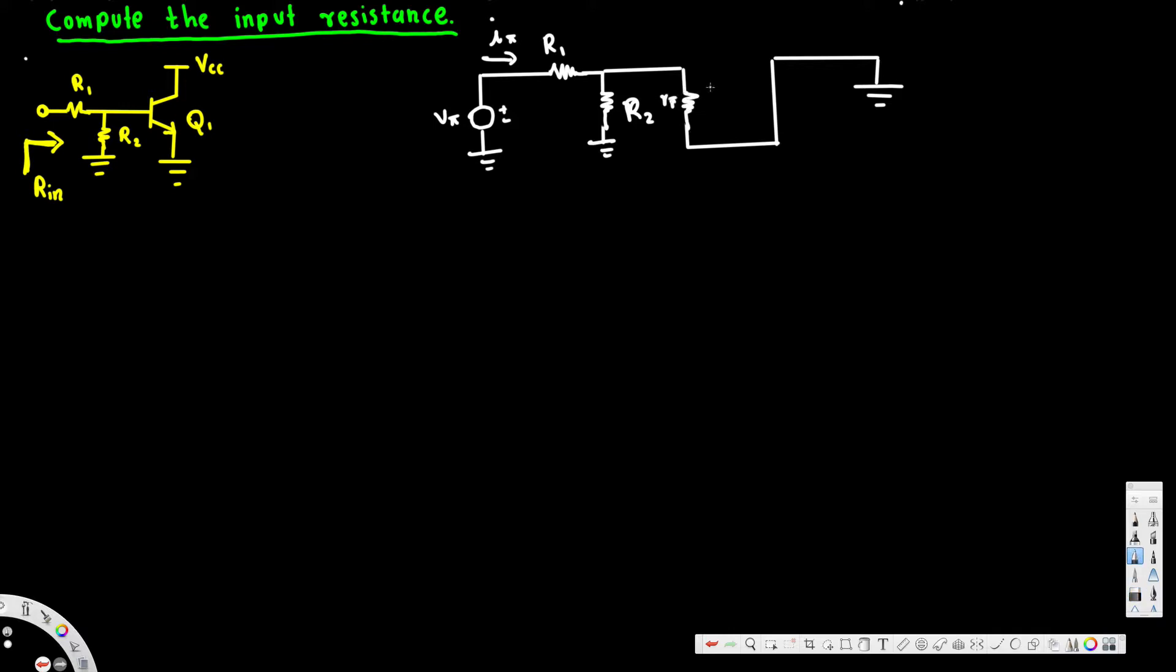And the voltage source, voltage across here, it will be V phi. And here we will have a current source that is GM V phi. Okay, now what we are going to do is we are going to apply Kirchhoff's voltage law, KVL, across here.